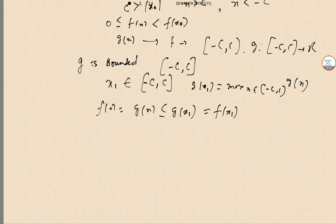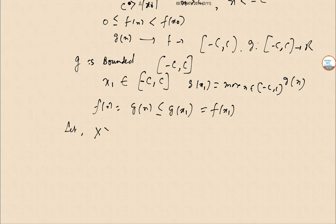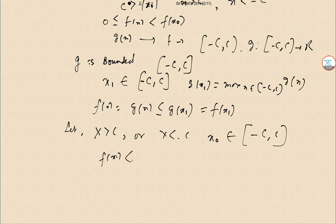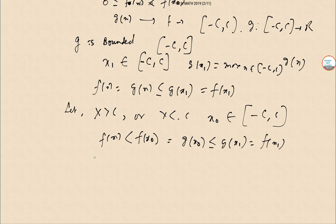Now for x > c or x < −c, since x₀ is in the interval [−c, c], f(x) < f(x₀). So g(x₀) ≤ g(x₁) = f(x₁). Therefore for all such x in R, 0 ≤ f(x) ≤ f(x₁). So f is bounded and attains its maximum value. The first part is done.